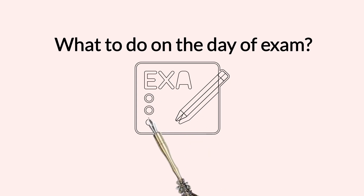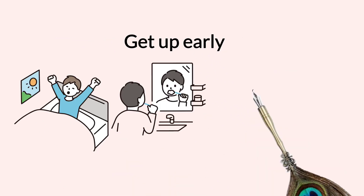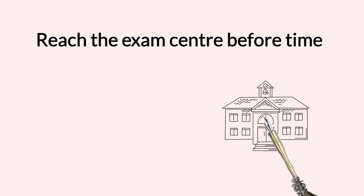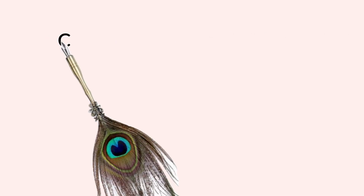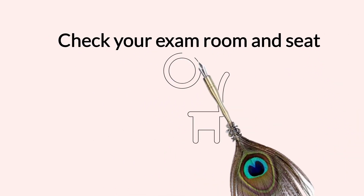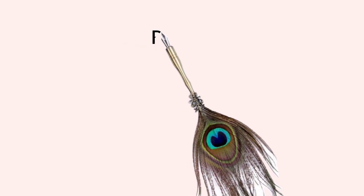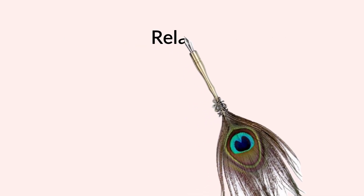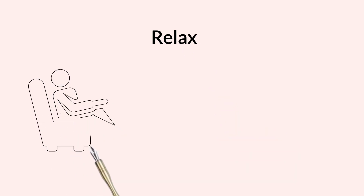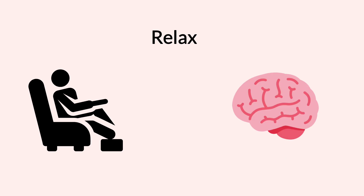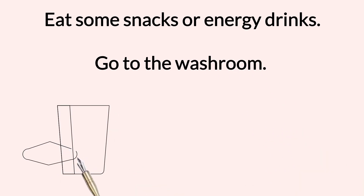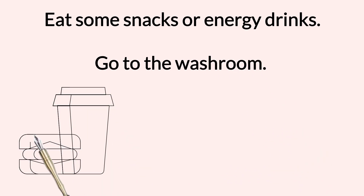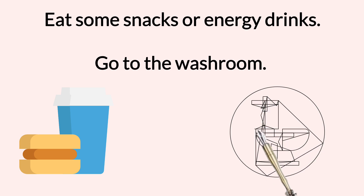What to do on the day of exam? After a proper sleep, get up early and get ready. Reach the exam center before time, especially on the first day. Make sure that the admit card and identity card are with you. Check where your exam room is and the seat to avoid last-minute rush. Just a few minutes before entering the exam room, stop reading and relax. Allow the brain to take a small break to allow the neurotransmitters to work at the main time. Eat some snacks or energy drink like glucose water or ORS just before entering the exam room to keep your energy level high. Also, go to the washroom to avoid distraction during exam time.